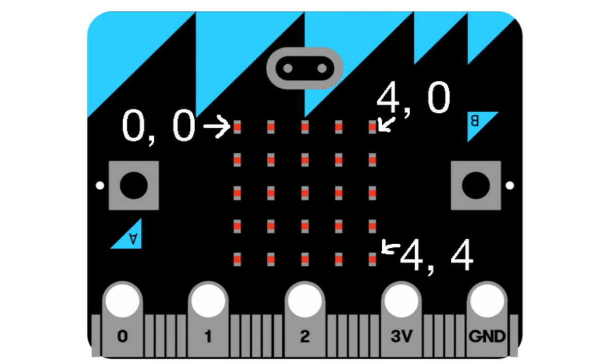In this tutorial, what we're going to do is take a look at writing some code to control the micro:bit. What we're going to try and do as well is learn a little bit about something called variables.